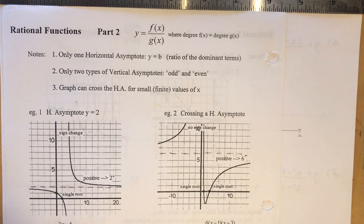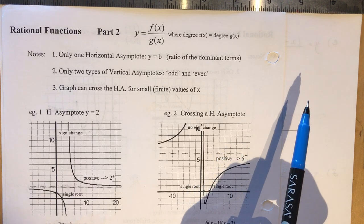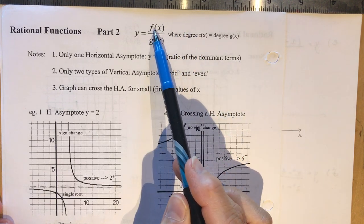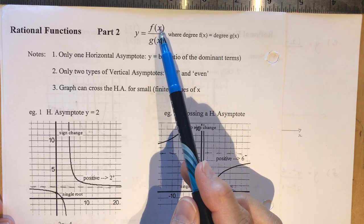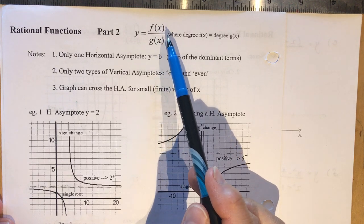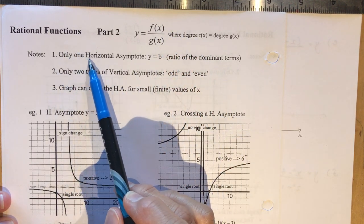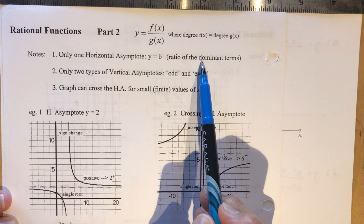Sections 5.2 or 5.3 on rational functions — graphing them. Today we're going to use the handout that I've referred to in the description of the video on my PBWiki site that you can download and keep for yourself. We're talking about rational functions where the degree in the numerator equals the degree in the denominator — something like x squared over x squared, or x over x, or x cubed over x cubed. In this case there's only one horizontal asymptote, y equals b, where b is the ratio of the dominant terms.